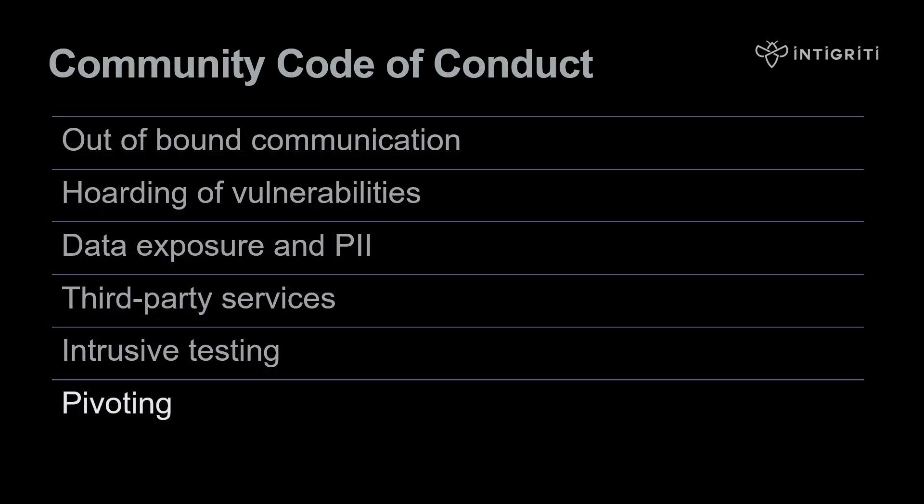Pivoting is not allowed. Researchers must cease testing and report vulnerabilities when they gain access to restricted environments. For example, if you find a remote code execution vulnerability on a web server, you would report that vulnerability — you wouldn't proceed to enumerate the web server and try to pivot further into the network.